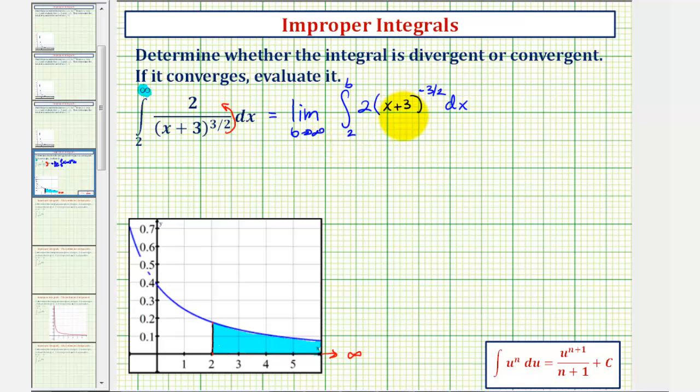Now we'll find the antiderivative. We might be wondering if we're required to perform u-substitution, where the base would be x + 3, so let's go ahead and check.